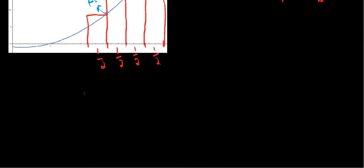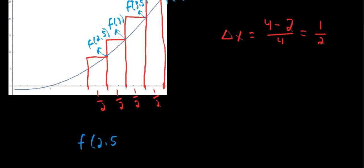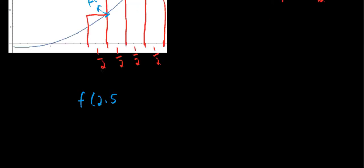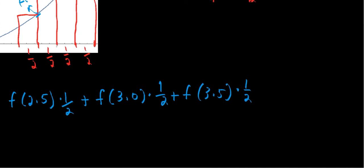So what do we have? If we have f of 2.5, that's this height here. f of 2.5 times 1 half. That's our first rectangle going from left to right. Plus f of 3.0, or just 3, times 1 half. Plus f of 3.5 times 1 half. Plus f of 4 times 1 half.